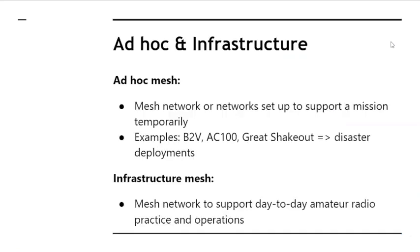There's a difference in what we want the networks to look like based on their purpose. The two main types are ad hoc and infrastructure networks. An ad hoc mesh is a network set up to support a specific mission, usually temporarily. You come in with 10 or 15 people, set up a network in a disaster area or wherever IP services are needed, and then break it back down when you're done. Examples are the Baker to Vegas relay race, the AC-100, and recently the Great ShakeOut. Any type of disaster deployment usually falls into the ad hoc mesh category.